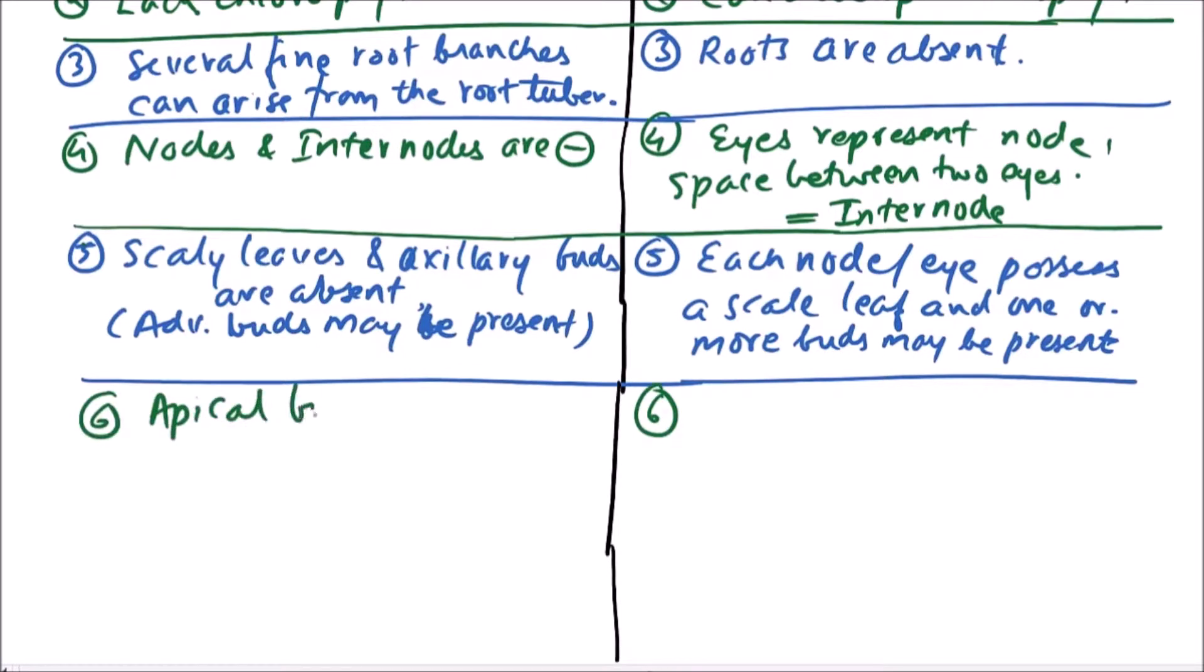Apical bud is absent in root tubers. In the case of stem tuber, the tip of tuber possesses an apical bud.